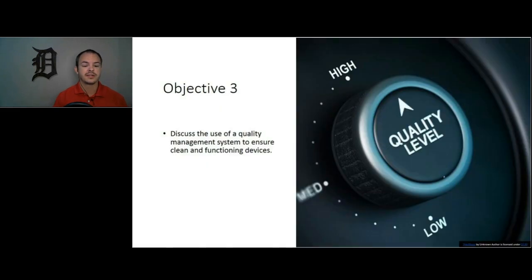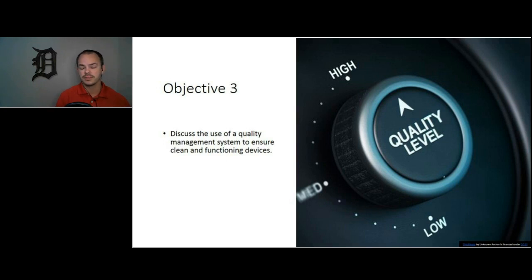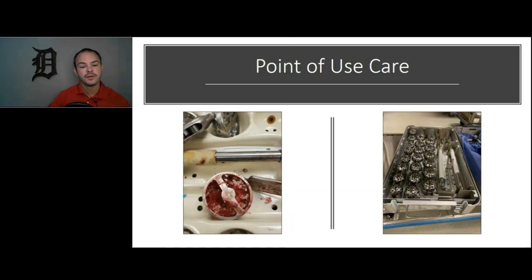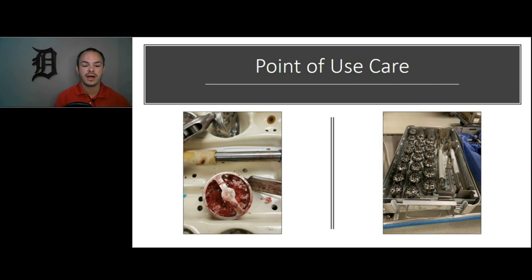Which brings us to objective three. This is meant to be a broad overview — there's a lot to cover and many of these could have presentations of their own. This is meant to get you acquainted with all the different components that should be part of your quality management system, even in an ASC. Don't overwhelm yourself when implementing these things, but you should be chipping away and growing your QMS program. If you're going to do total joint replacement at your facility, or even if you're not, you need to get working on your point of use care — it's the foundation to success when processing reusable devices.